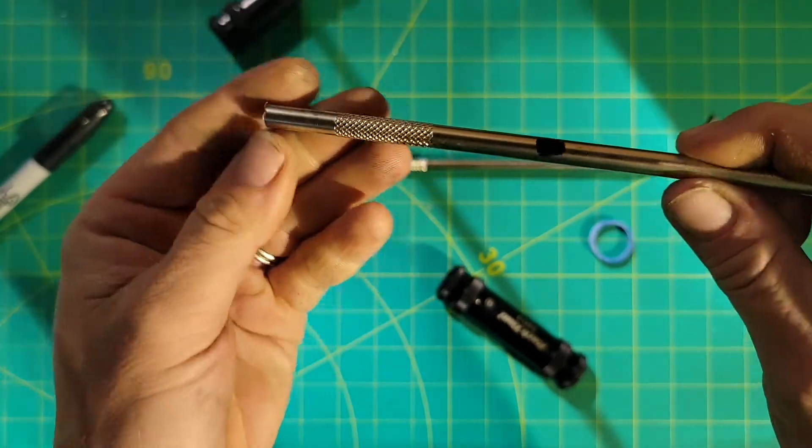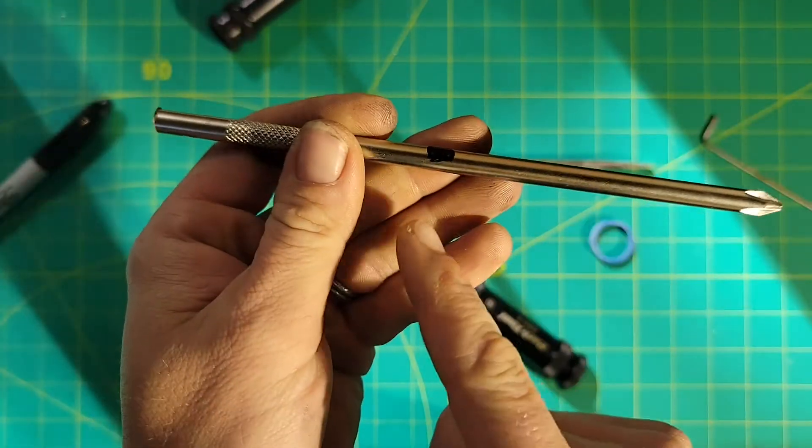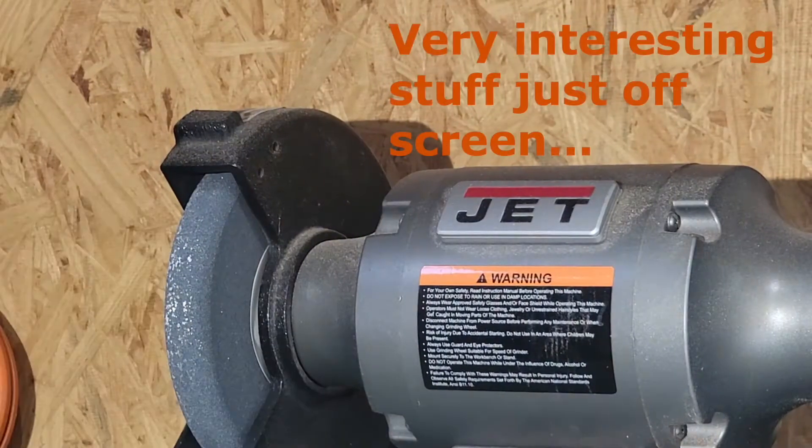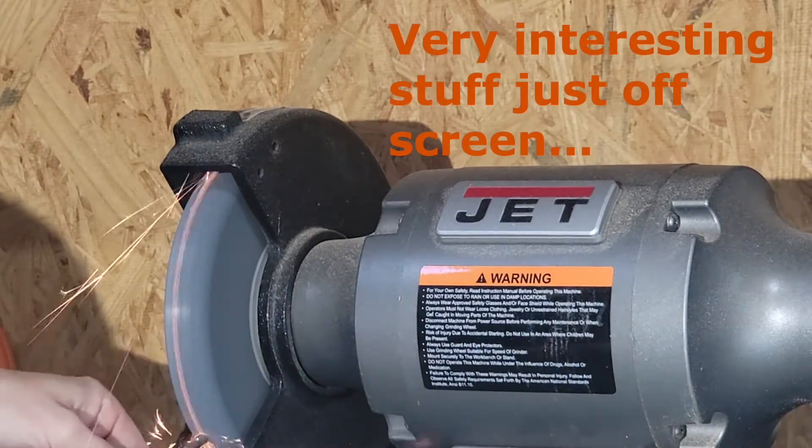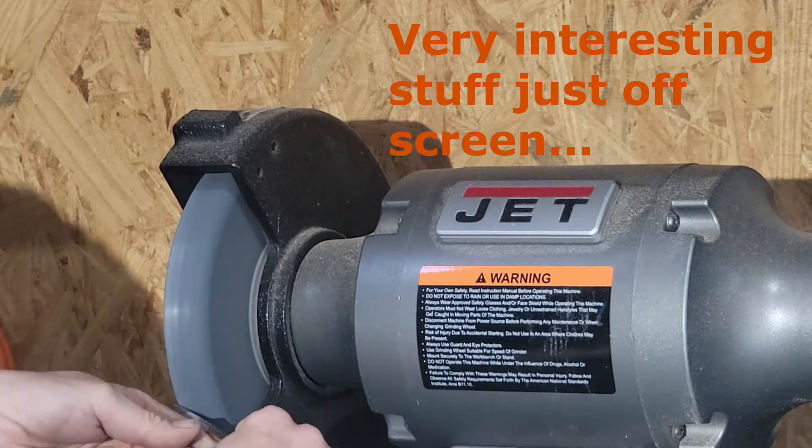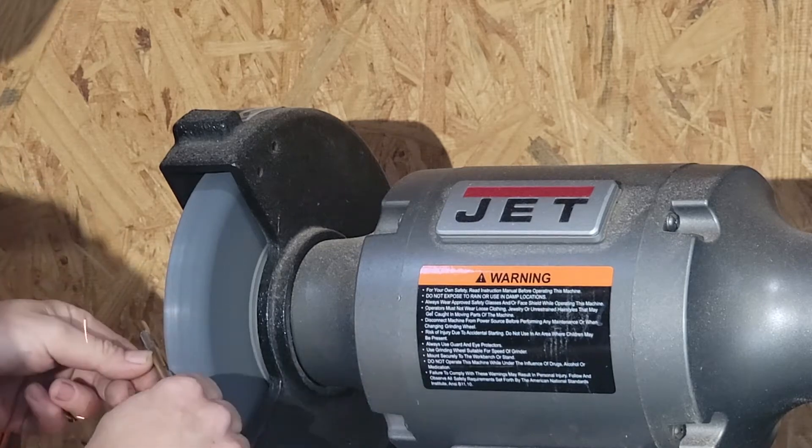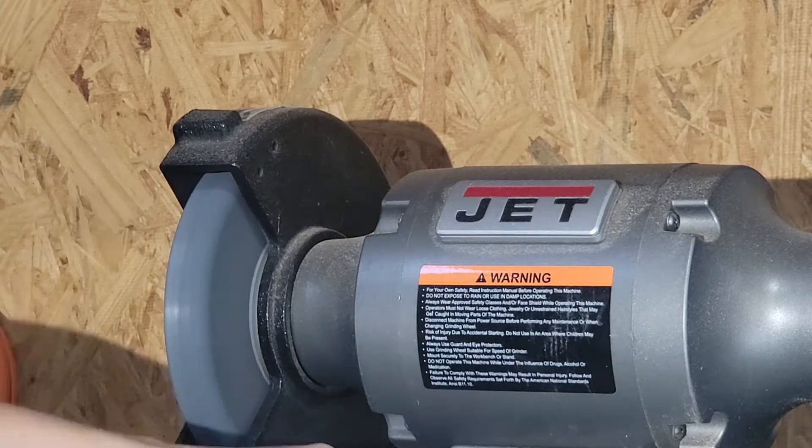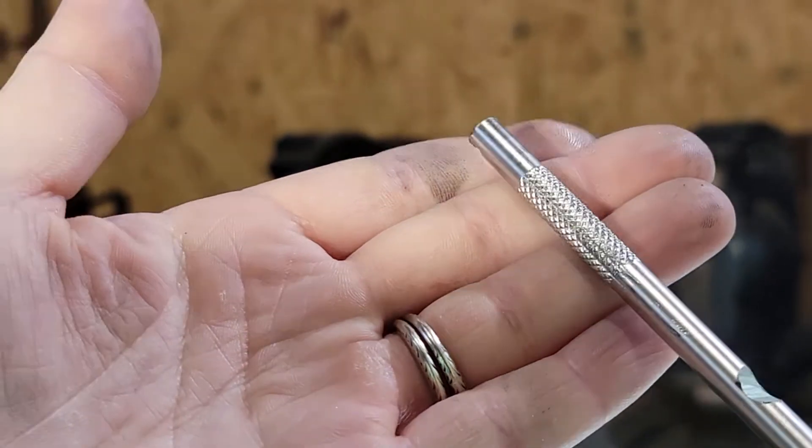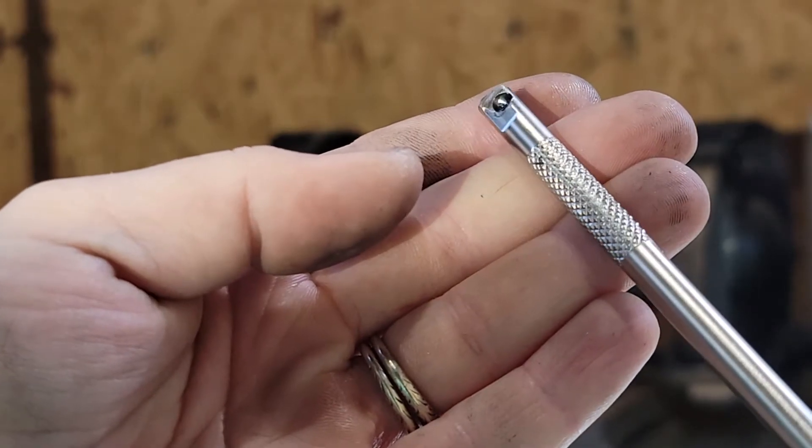So now what we can do is use the grinder to take the excess material off the top and then use the grinder to put a little bit of a flat in right here for the grub screw. So this knurling is actually a little bit raised so we're gonna have to actually smooth that out too so that it will fit into the tool.